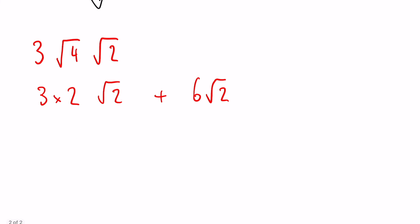Now 3 times 2 is 6. So we have 6 root 2 plus 6 root 2. And now that we have the roots the same, we can simply write this as 12 root 2.